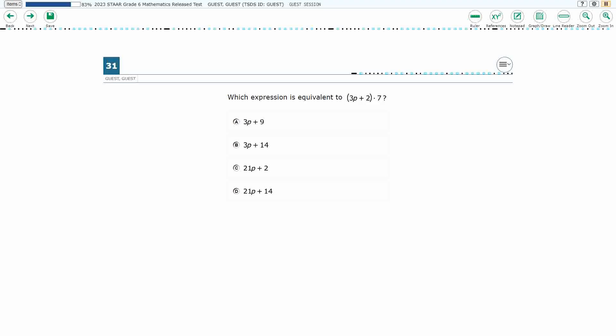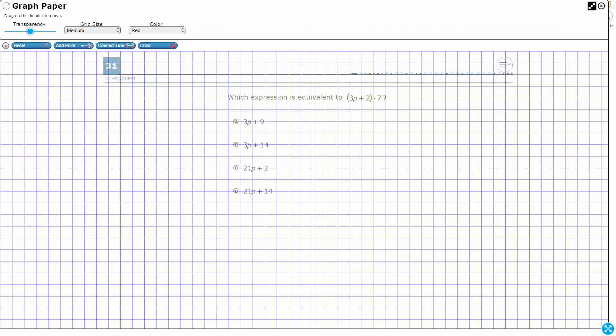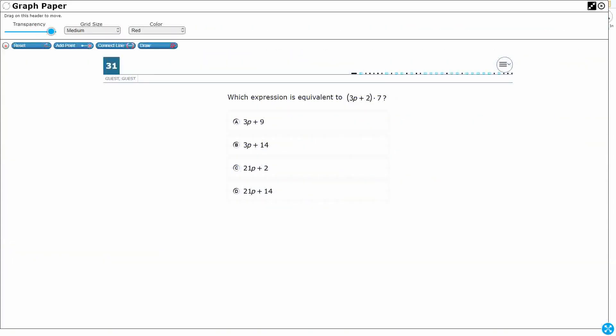So we need to know which expression is equivalent to, and then we've got this expression here, 3p plus 2 in parentheses multiplied by 7. And so we need to figure out how we could use a different property of operation possibly to figure out what this means.